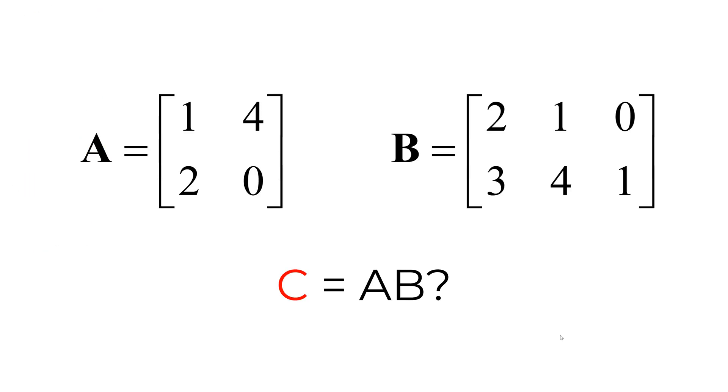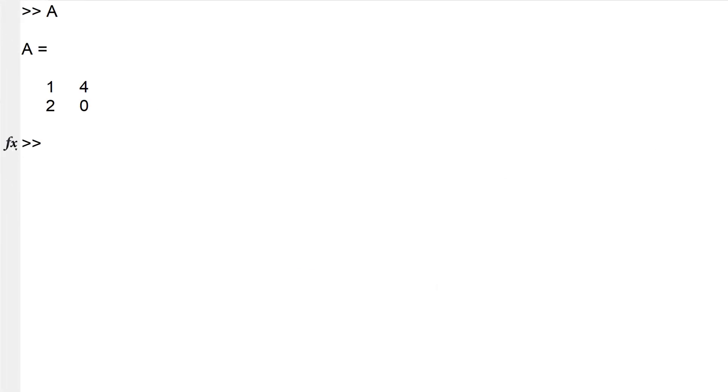What if you have two by two matrix A and two by three matrix B and want to calculate matrix multiplication? First of all, is it possible to calculate? The answer is yes. The column size of matrix A is two and which is the same as the row size of matrix B. In MATLAB, we create matrix B and calculate the matrix multiplication as C equals to A star B.